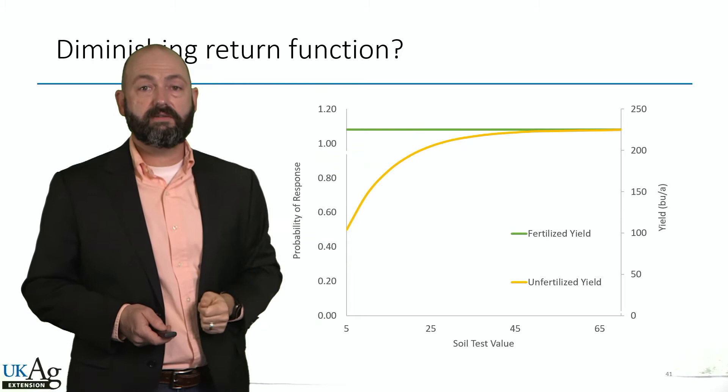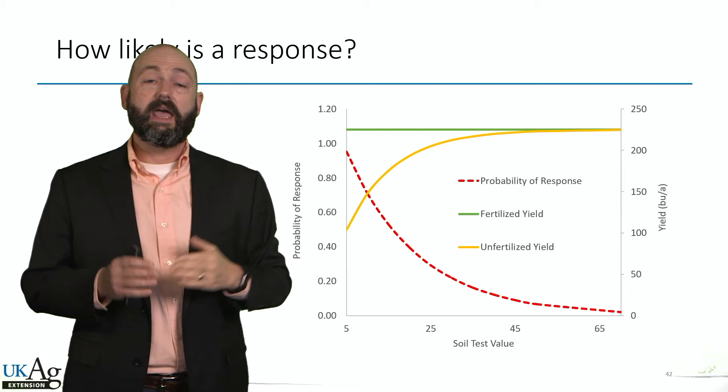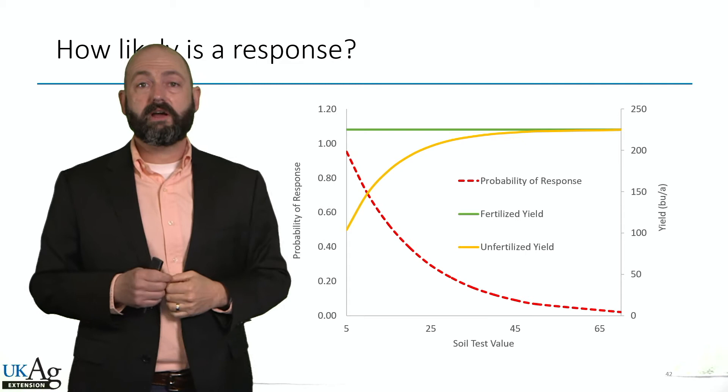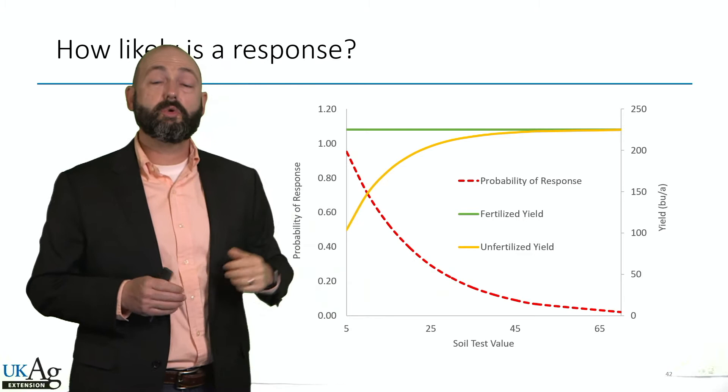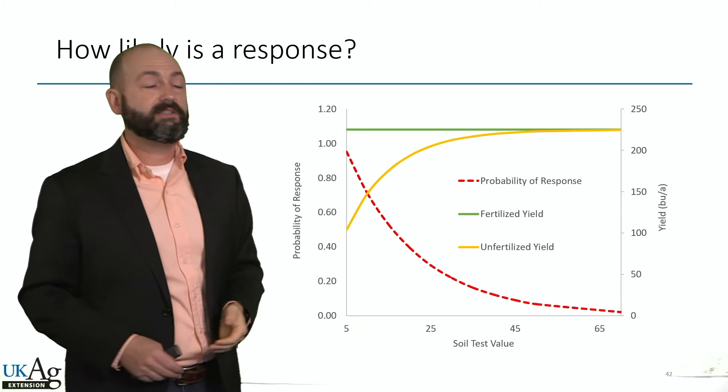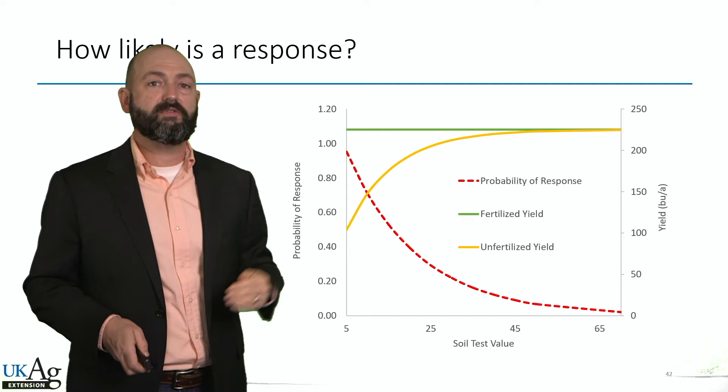The other thing we get from combining calibration and correlation data is the probability of response, and we need to understand this to make recommendations. As soil test goes up, the degree of response goes down — that delta yield decreases — but also the probability of a response goes down. When my soil test is really low I have a higher probability of getting yield when I fertilize, and as I approach that optimum critical range for any given nutrient, the probability of a response starts to go down.